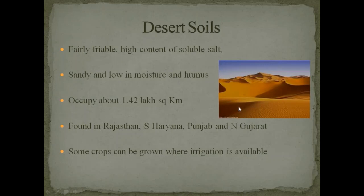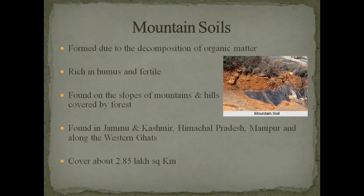Desert soil — desert means sand. It is fairly friable with high content of soluble salt. It is sandy and low in moisture and humus, so it is not fertile and not suitable to grow crops. Desert soil occupies about 1.42 lakh square kilometres. It is mainly found in Rajasthan, southern Haryana, some parts of Punjab and northern Gujarat. Only a few crops can be grown where irrigation is available, such as date palm, etc., especially in the border areas of the Thar Desert of Rajasthan.